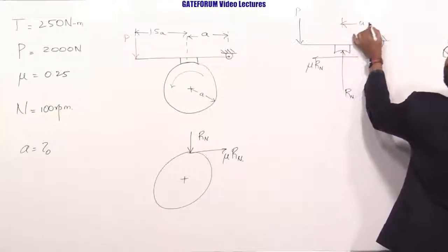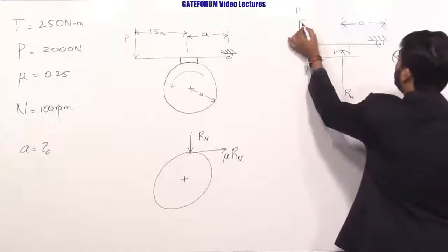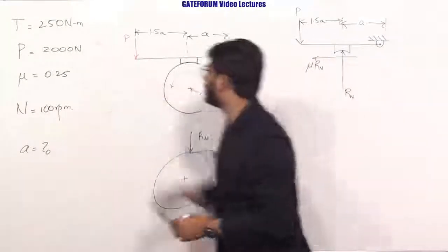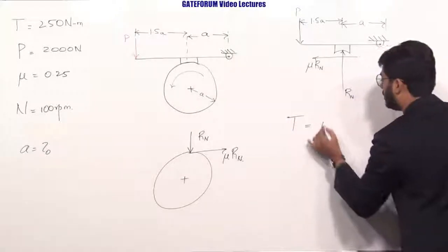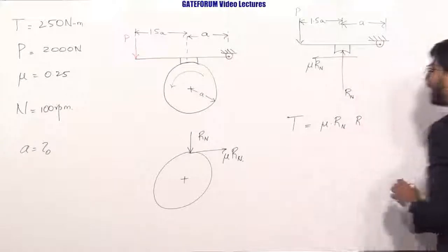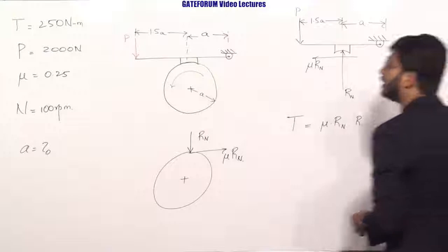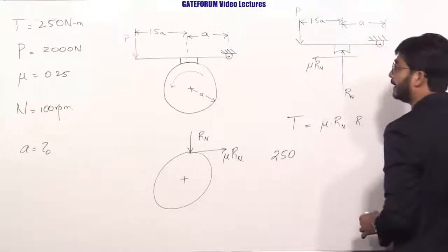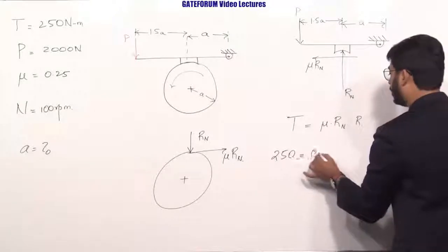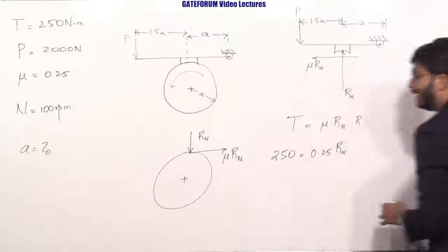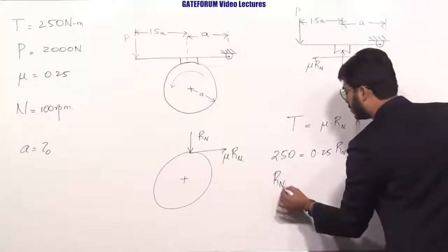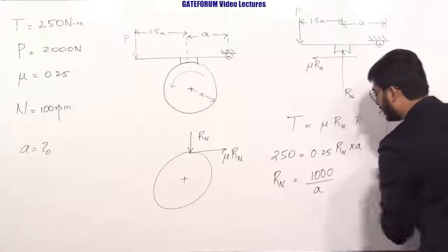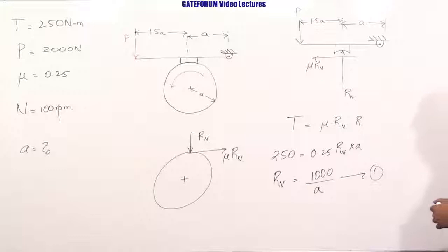A is given, and 1.5 times A is also indicated. Coming to the torque equation: torque = μ × R_n × R, where R (the radius) equals A. So 250 = 0.25 × R_n × A. Since R_n is not known and A is not known, solving gives R_n = 250/(0.25 × A) = 1000/A. This is the first equation.